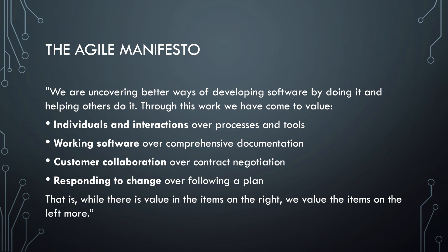Officially, Agile isn't a process but a collection of processes. There are many of them, such as Extreme Programming, Scrum, Adaptive Software Development, and Kanban. These methods all try to minimize bureaucracy in some way while developing software.